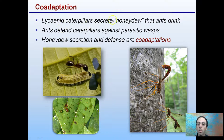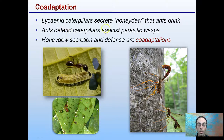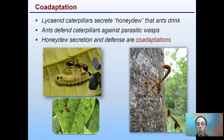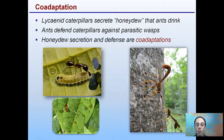Coadaptation: we have caterpillars that secrete honeydew, the sticky sugary substance that ants like to drink. The ants defend the caterpillars against parasitic wasps — the honeydew secretion and that defense are coadaptations. The caterpillar produces honeydew that the ants favor, which allows the ants to protect the caterpillars from parasitic wasps that lay eggs inside them and cause the caterpillars to be eaten from the inside out. So the honeydew that the ants like is protecting the caterpillars from the wasps — a pretty complex system.